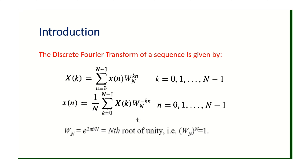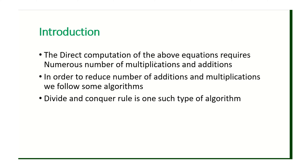Now let us address why we go for the FFT algorithm even though we have the matrix method or direct method to solve DFT. The answer is simple: direct computation of the DFT equation requires a large number of multiplications and additions. In order to reduce the number of additions and multiplications, we follow certain algorithms. Divide and conquer is one such algorithm.